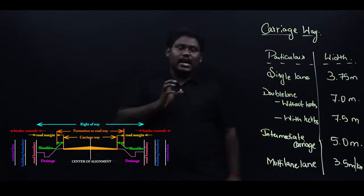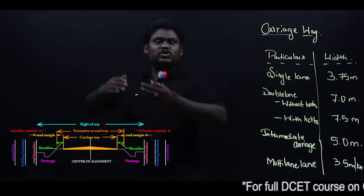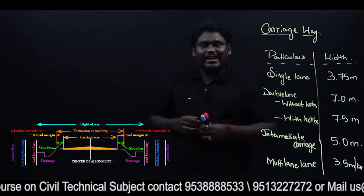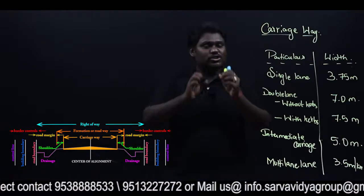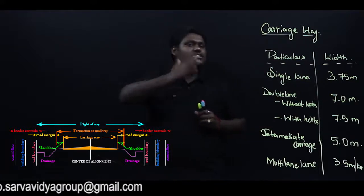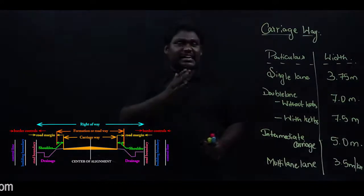...these vehicles are moved to the shoulder part, that is the emergency lane, and the breakdown is repaired there. So this shoulder is meant for such purposes and is very much required in national and state highways.